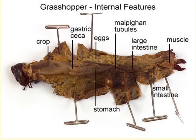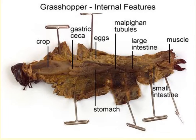Because of the grasshopper's relative small size and the difficulty in distinguishing the internal anatomy, we will be focusing mainly on the external anatomy. However, I do want to briefly mention some of the key components of the internal structures of the grasshopper.